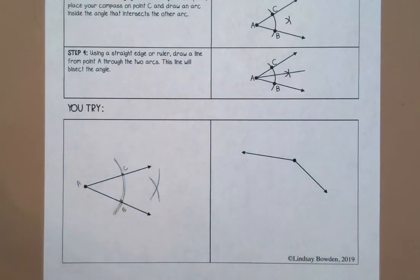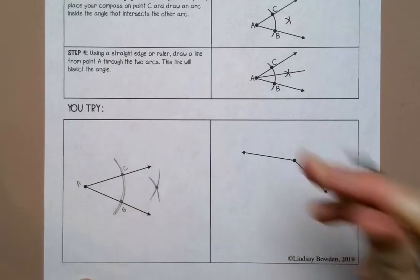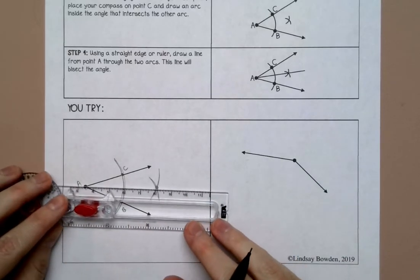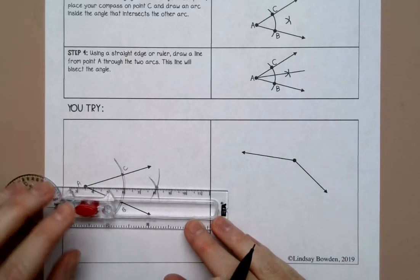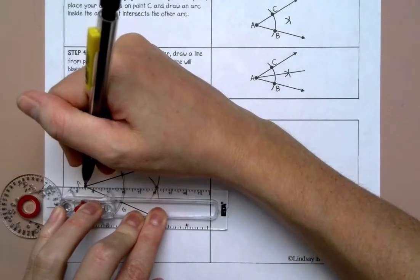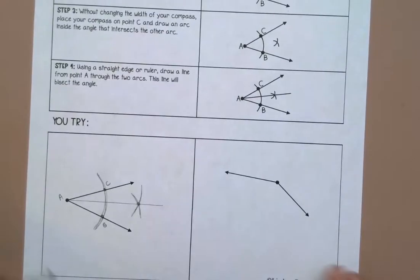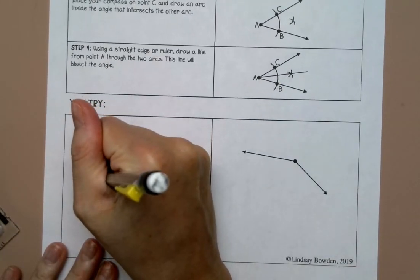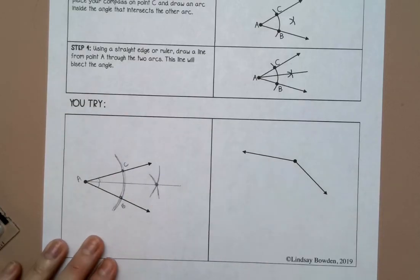and where those intersected I'm going to draw a straight line from the vertex of the angle through that intersection and that should bisect the angle. These two angle pieces now are equal.